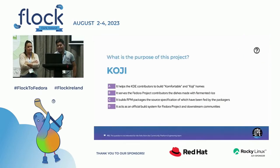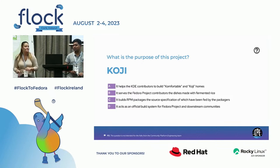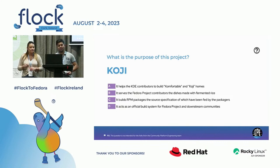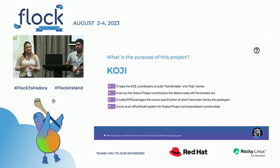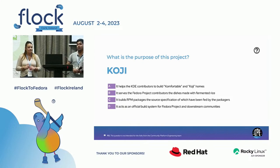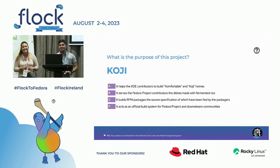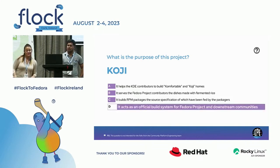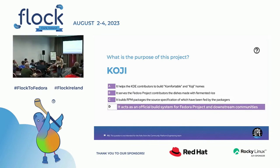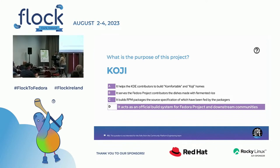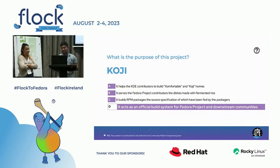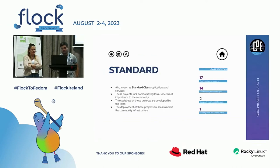These are the critical class two applications used by both Fedora and CentOS. Now a Koji quiz: is Koji used for making comfortable homes for KDE contributors, for making RPM packages from source specifications fed by packagers, or is it the official build system of the Fedora project and all downstream communities? The answer is D — Koji does a lot more than just RPM packages; it can build OS images and much more.